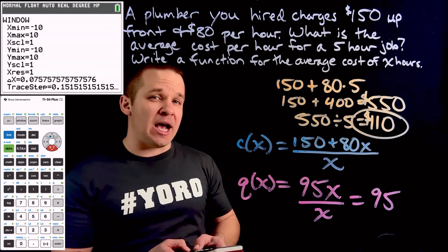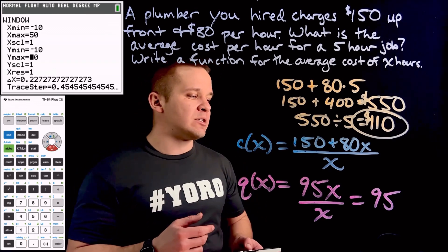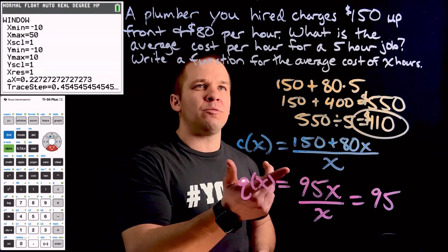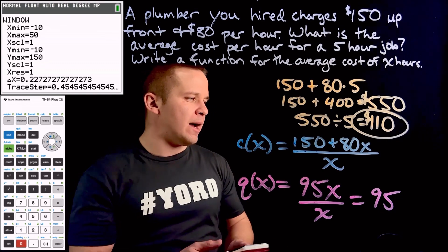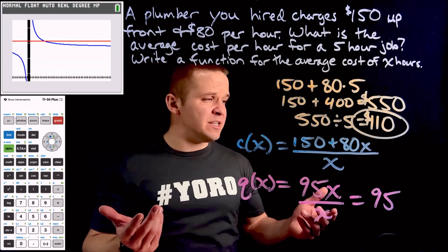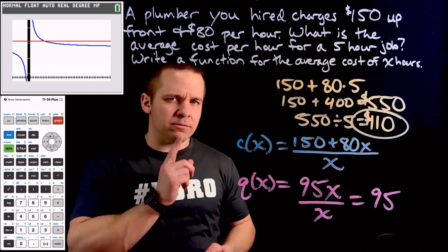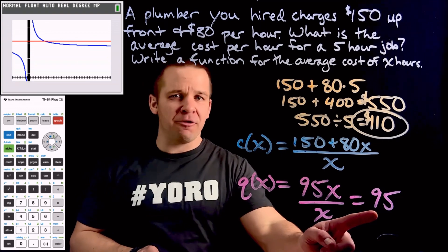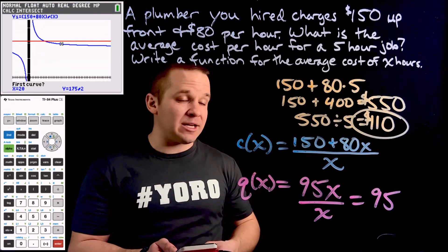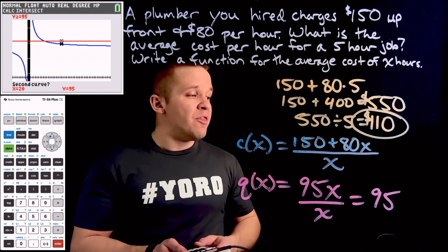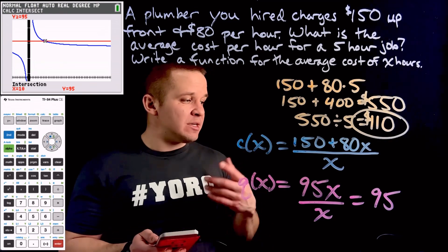I'm going to change my X max to 50 — hopefully the job's not going to take 50 hours, that's going to be expensive. My Y max is my cost. I know the cost was $110 after five hours, so let's go a little more than that — I'll go with 150 for my Y max. Now I can see basically everything I need: I've got the blue rational function and the red constant. That point of intersection is where the two are equal — where the cost is $95 for both. I'll hit Second Calc and go to Intersect. I hit Enter on the first curve, select the second curve, arrow over to that spot, and I've got 10 hours.